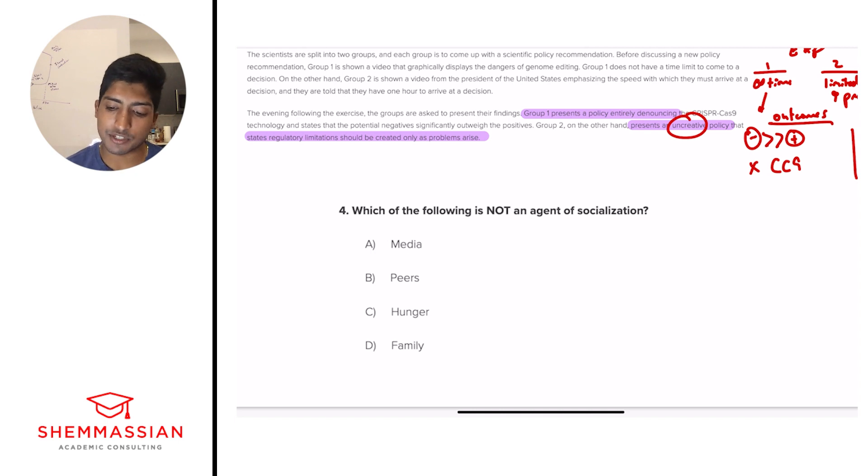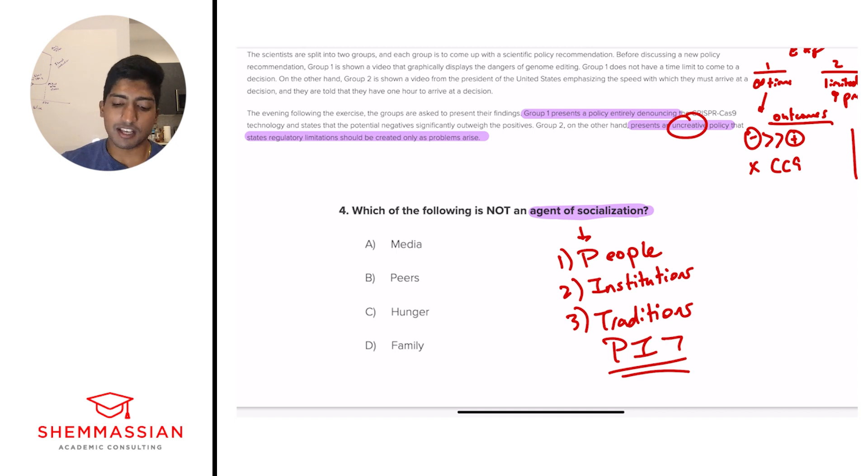Which of the following is not an agent of socialization? Is it A, media, B, peers, C, hunger, or D, family? So this is a standalone question. We don't even need to look at the passage. But that requires us to understand what is an agent of socialization. So we described what socialization is in this previous question. But what influences that? What is an agent of socialization? Well, we have three things that I want you to focus in on. One, people. People in your life can affect socialization. Two, institutions. Or three, traditions. So this spells out PIT. So that's my little mnemonic to help me remember. A pit of socialization. But the idea is, if they fall into these three categories, they're going to be an agent of socialization.